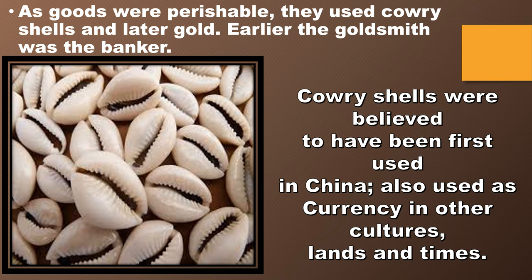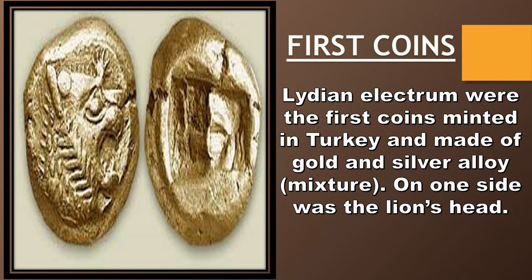Cowrie shells were believed to have been first used in China and were also used as currency in other cultures, lands, and times. What were the first coins? Lead and electrum were the first coins minted in Turkey, made of gold and silver alloy — alloy means mixture. They were made of a mixture of silver and gold, and on one side was the lion's head.